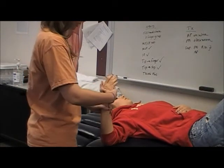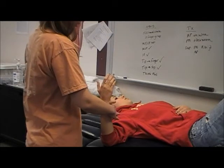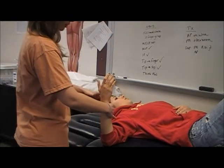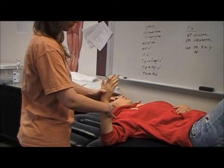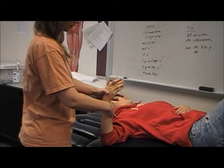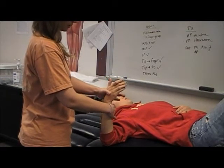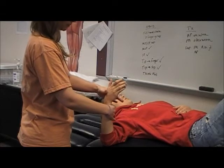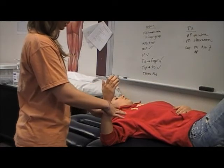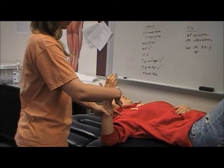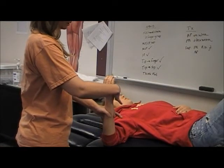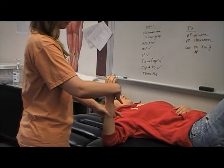For ulnar deviation, you can stabilize on the ulnar side and press into ulnar deviation with the web space of the fingers. For radial deviation, switch hand positions and push to the radial side.